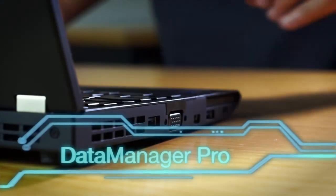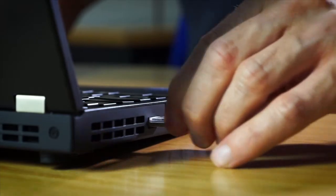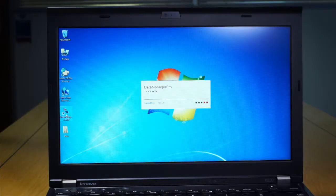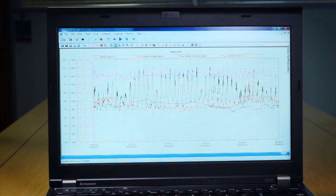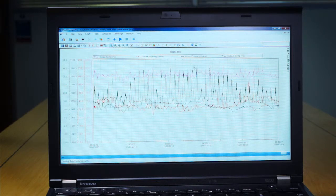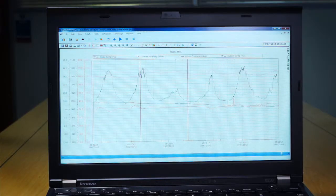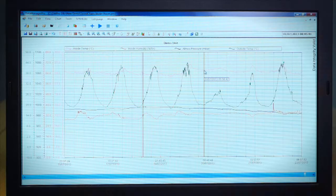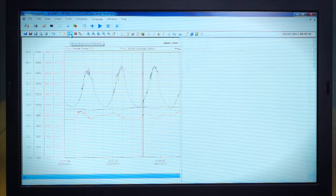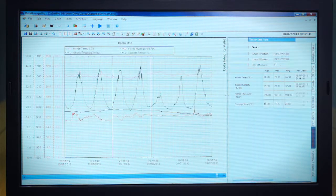When used together, ABB ScreenMaster RVG200 and Data Manager Pro software combine to create a powerful data recording and analysis solution. When connected via Ethernet, the software can automatically collect data files from multiple RVG200 recorders, keeping your process data securely backed up and Data Manager Pro's database up to date, ready for detailed analysis using the software's powerful review tools.